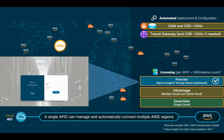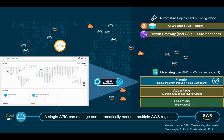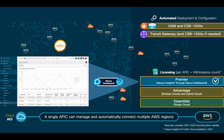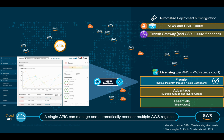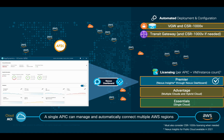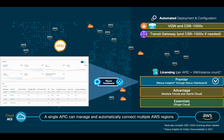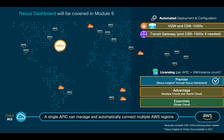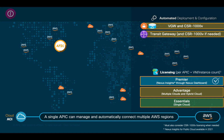Nexus Insights, running on Nexus Dashboard, provides artificial intelligence-based network telemetry and analytics. As of 2020, Nexus Insights is available for on-prem environments only, but public cloud integration is expected in 2021, which will deliver hybrid cloud visibility and a proactive operational model across clouds. We will cover Nexus Dashboard and Insights, as well as how it integrates to ACI, in Module 6.